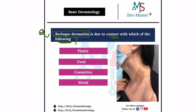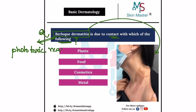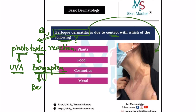So obviously, this is a case of berlique dermatitis. Remember that berlique dermatitis is a type of phototoxic reaction. It has two components — photo and toxic. The photo component is due to UVA exposure, and the toxic component is due to a chemical called bergapten, which is present in bergamot oil.